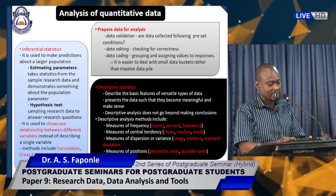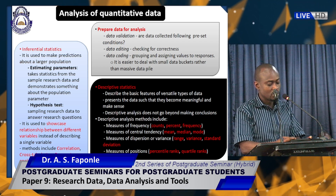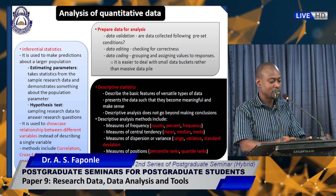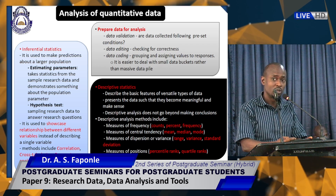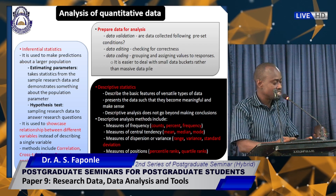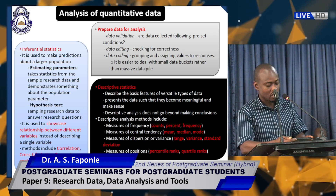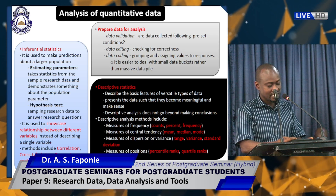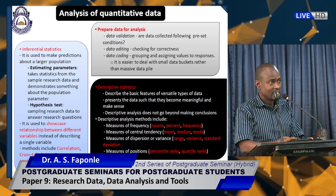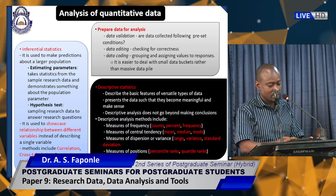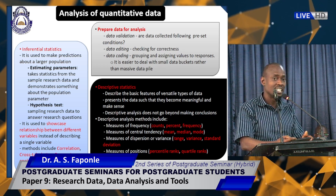Inferential statistics are used to make predictions about a larger population. Two things can be done: we can use it to estimate parameters — taking statistics from sample research data to demonstrate something about the larger population — or we can test hypotheses, involving sampling research data to answer research questions. Inferential statistics is used to showcase relationships between different variables. Inferential statistics methods include correlation, cross-tabulation, regression analysis, frequency tables, and analysis of variance.